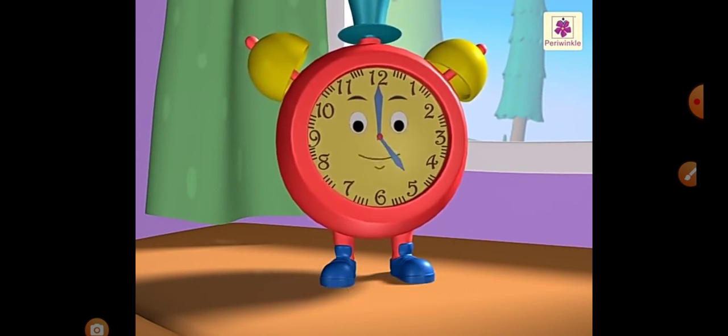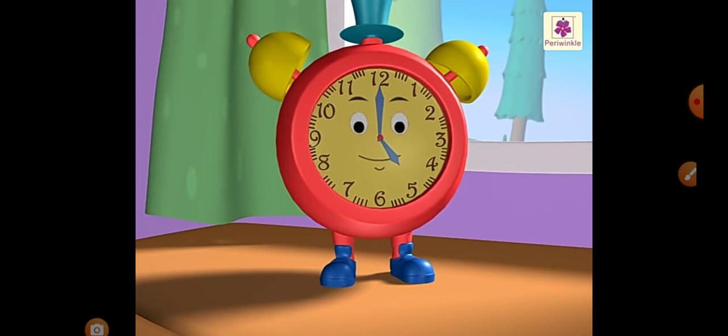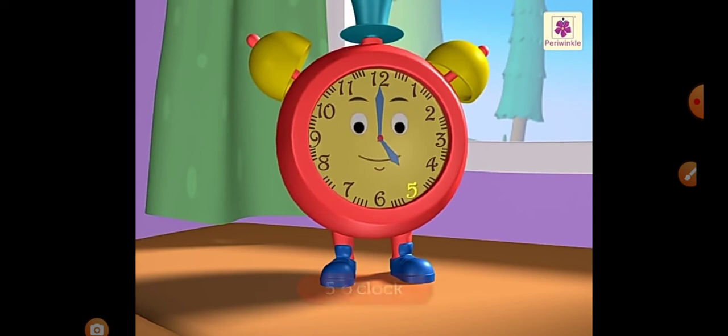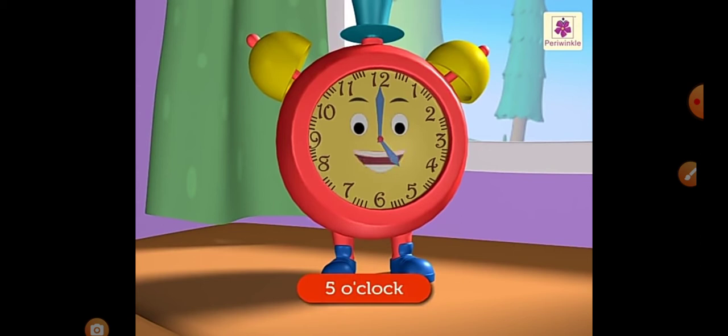Now see, the long hand is on twelve and short hand is on five, that means it is five o'clock. Okay, now you can see long hand is on twelve and short hand is on five. It is five o'clock.